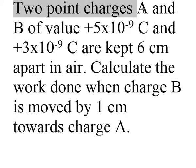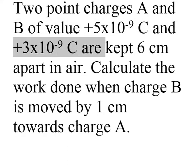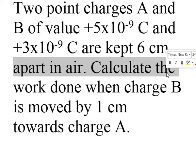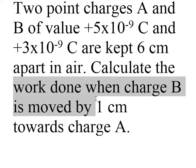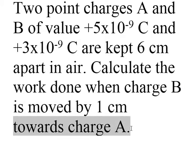Two point charges A and B of value 5 into 10 to the power minus 9 coulomb and 3 into 10 to the power minus 9 coulomb are kept 6 cm apart in air. Calculate the work done when charge B is moved by 1 cm towards charge A.